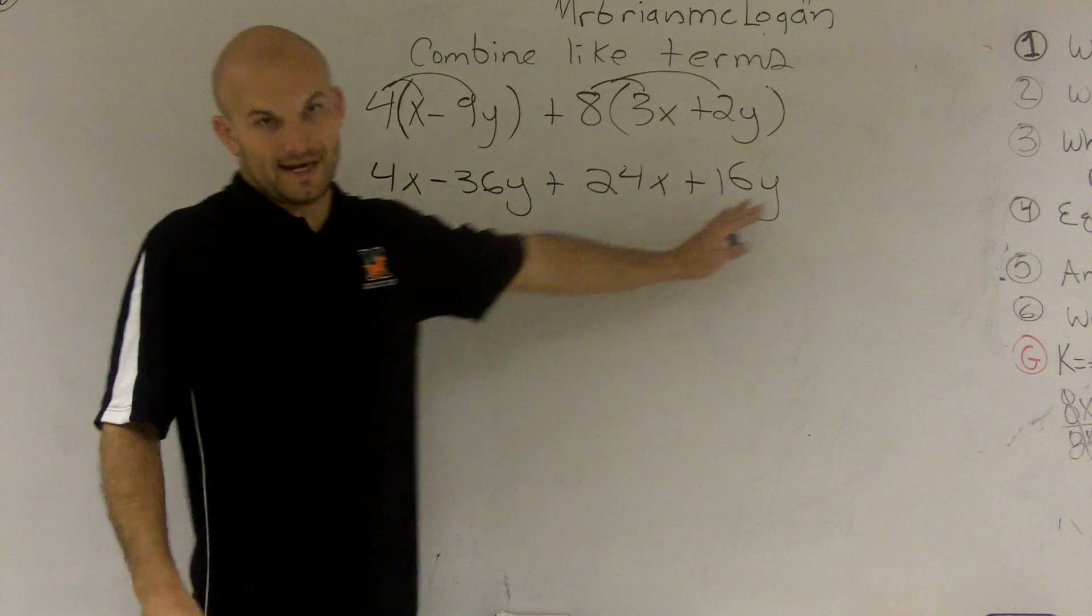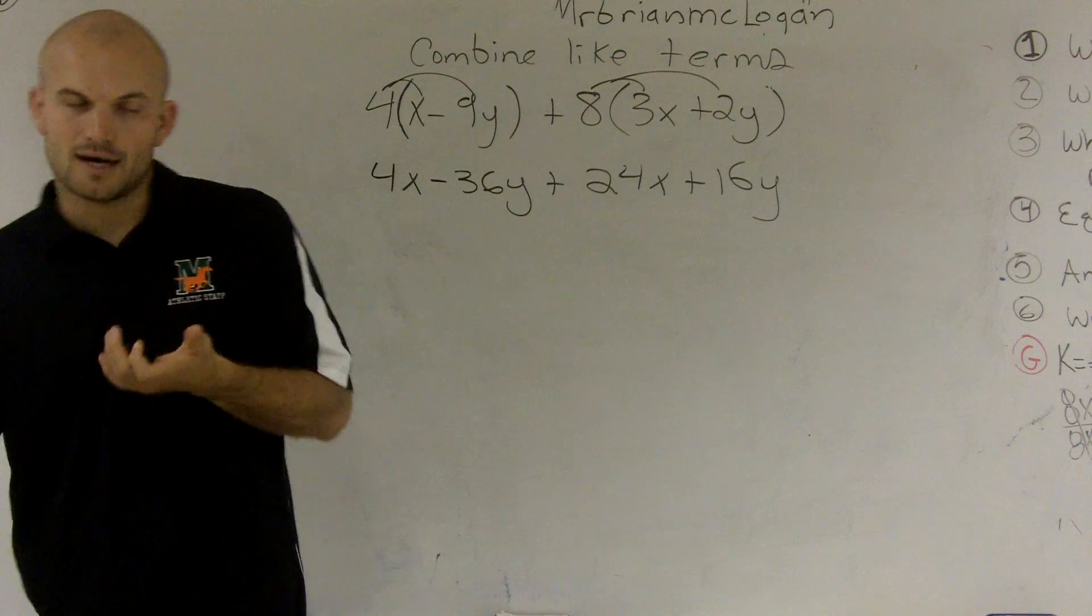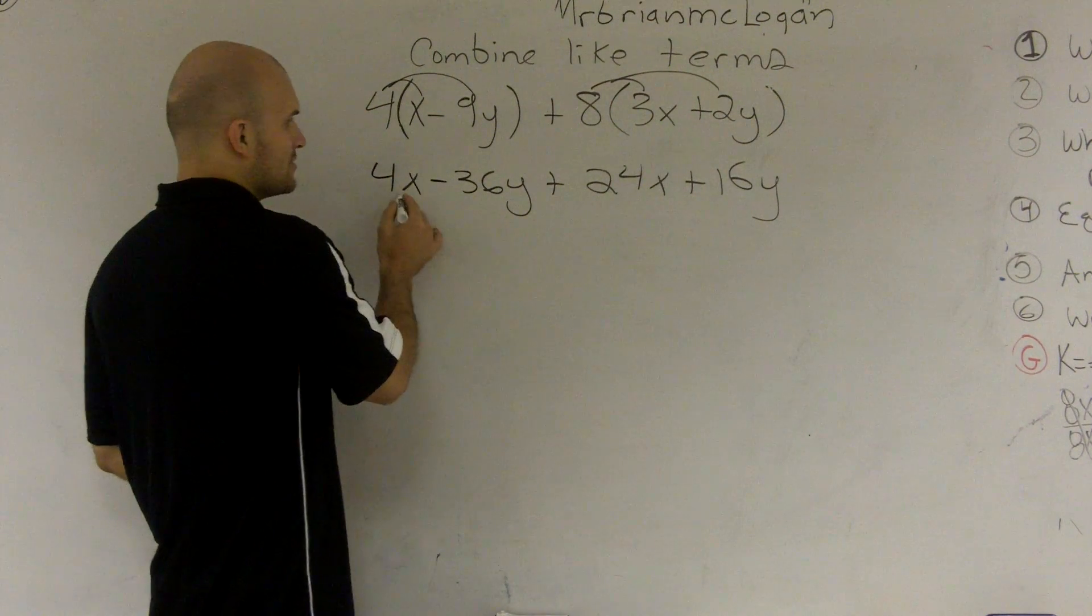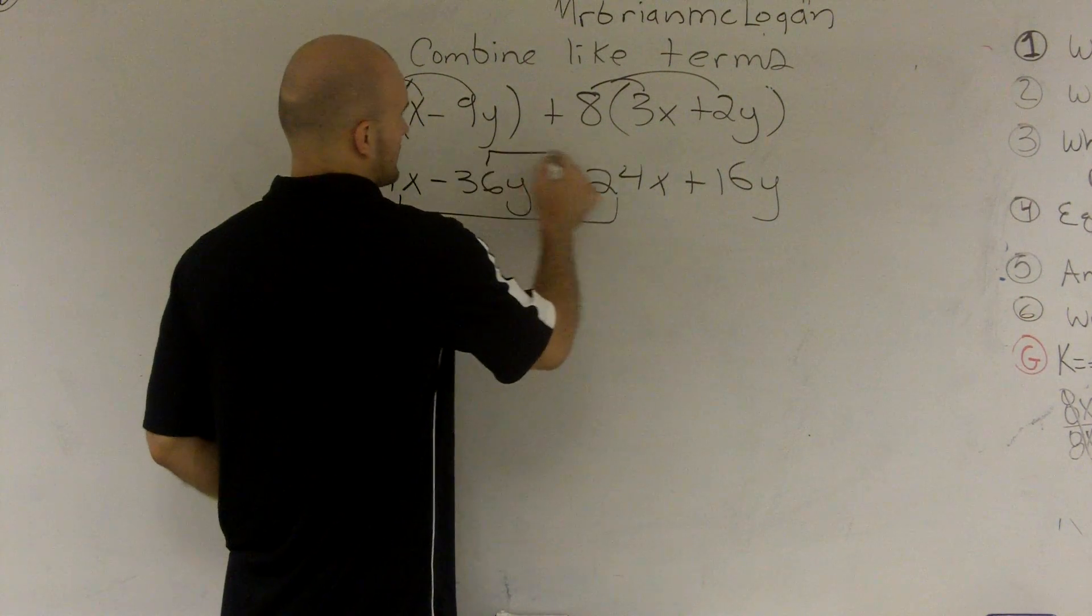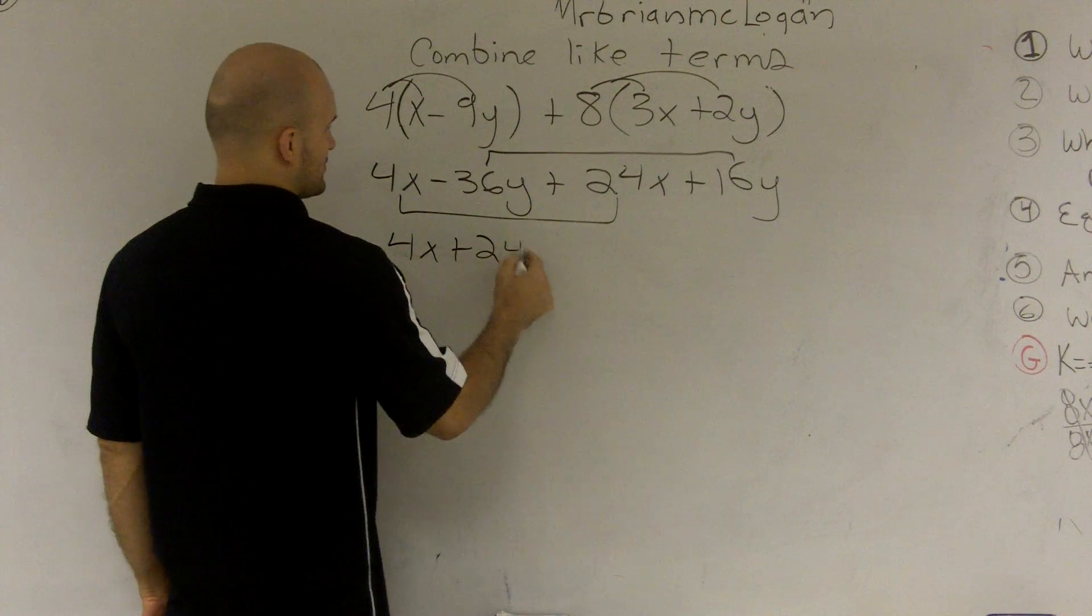Now I've simplified it, and when I combine like terms, I can only combine x's with x's, y's with y's. So I'm going to rewrite this so that my x's are next to each other and my y's are next to each other.